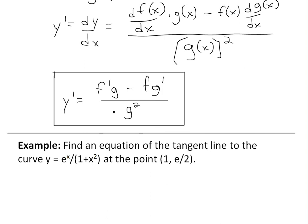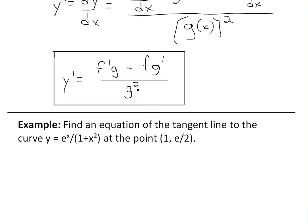Or you can write it this way: y prime equals f prime times g minus f times g prime, all divided by g squared. And the proof for this, you can see in the video links below as well as other examples.